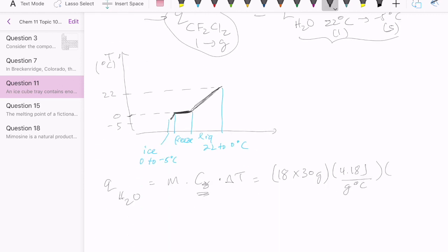Then we need specific heat of liquid water, and that value is 4.18. And then we need our temperature change, which is just going to be 22 degrees Celsius, 22 minus 0. Calculating this number gives me 49,658.4 joules. So that's the first step.